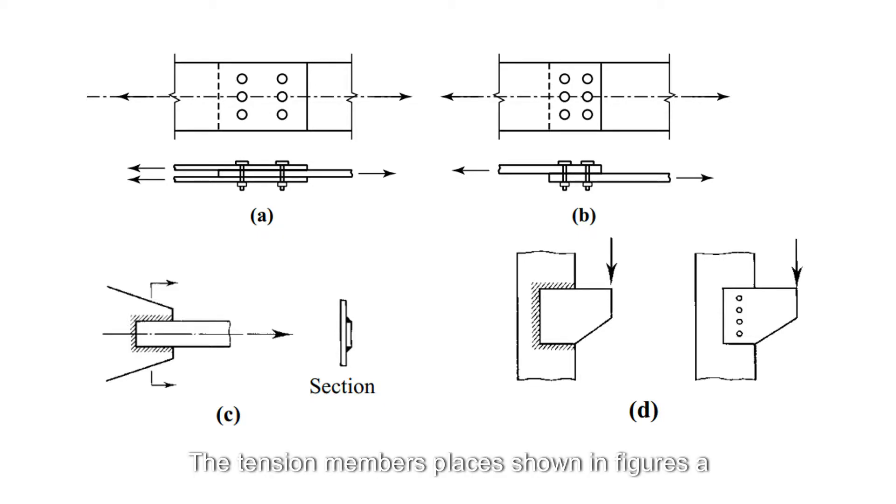The tension member splices shown in figures A and B subject the fasteners to forces that tend to shear the shank of the fastener. Similarly, the weld shown in figure C must resist shearing forces.